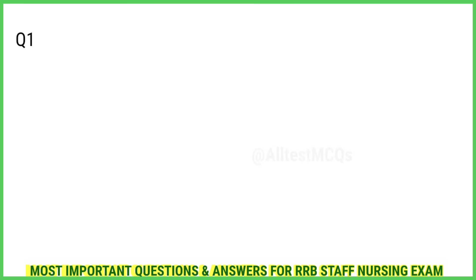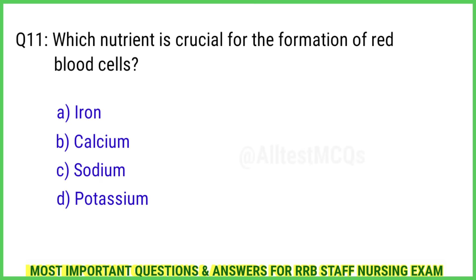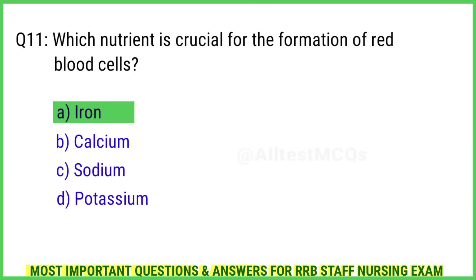Question 11. Which nutrient is crucial for the formation of red blood cells? The right answer is Option A: Iron.